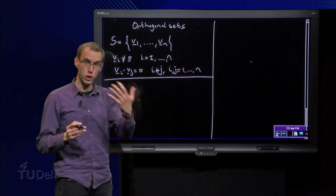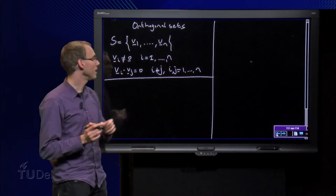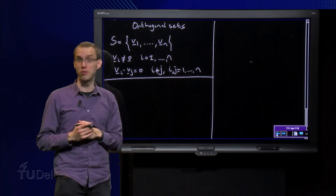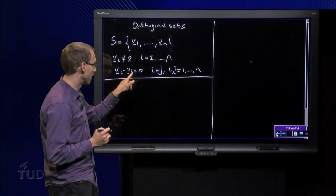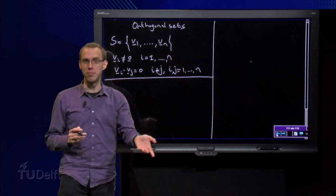Furthermore, we assume that S is an orthogonal set, which means that the inner product of any two vectors equals zero, as long as you do not have the same vector.